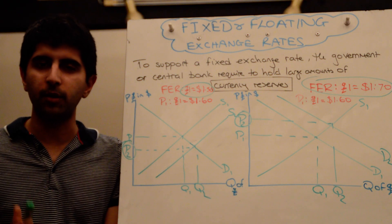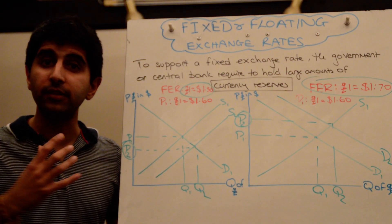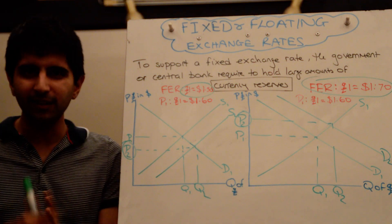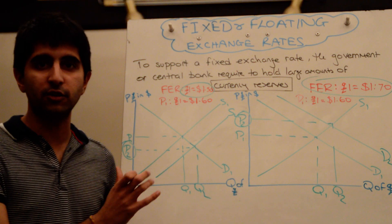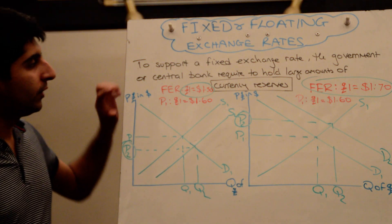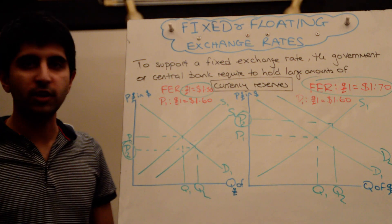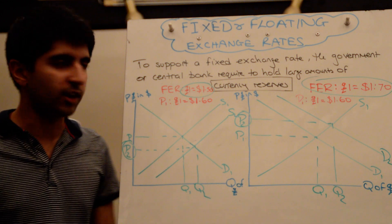But the problem with interest rates is, one, it's not a direct way of increasing or decreasing the exchange rate. And, two, the major side effects of the economy can be disastrous, can go against the intentions of the exchange rate policy in the first place. So, what you tend to see is less interest rate management to maintain a fixed exchange rate, although in theory it could happen. You tend to see more buying and selling of currency, using currency reserves, to increase the value of the exchange rate.